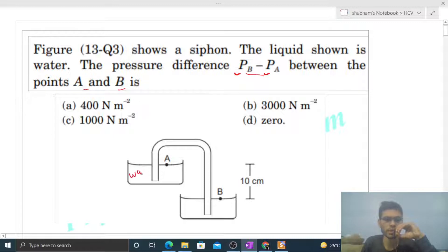see the diagram - here is water and here is water and here is water, and here is connected to a siphon. So we have to find out the pressure difference between point A and point B.